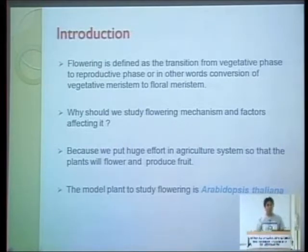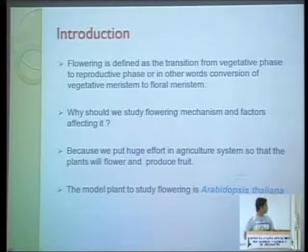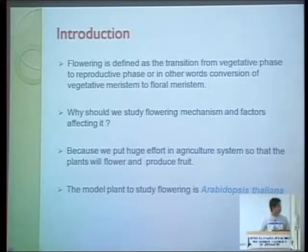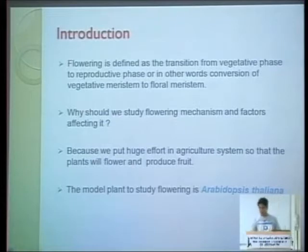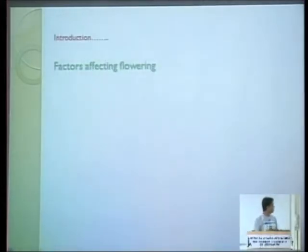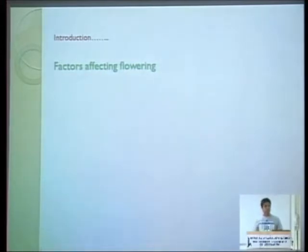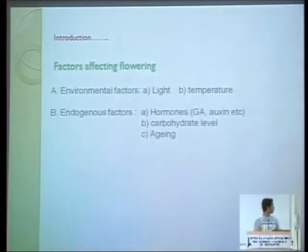To study flowering, Arabidopsis thaliana is the model plant. It has a short life cycle, most of its genes are known to us, and it can be easily grown in the lab. To understand flowering, we should understand what factors affect it.